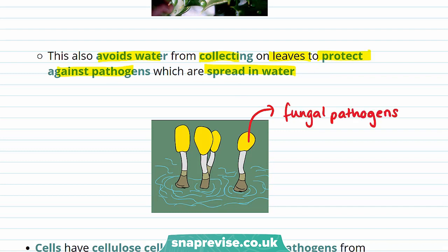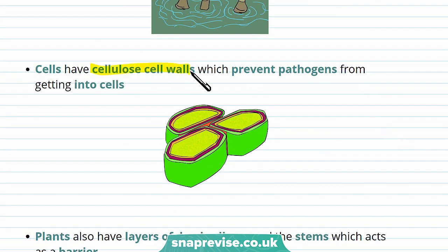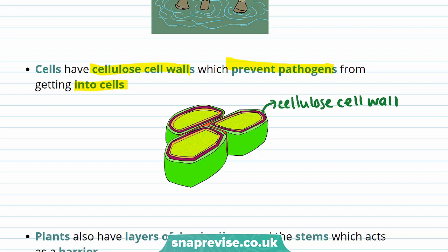Most fungal pathogens require standing water for spore germination. Cells also have a cellulose cell wall, which prevents pathogens from getting into the cells. Cellulose cell walls are excellent barriers. Plants can have primary and secondary cell walls. The primary cell wall is made up mostly of cellulose, giving the cell strength and flexibility because the cellulose fibres are cross-linked with other substances such as pectin. Many cells also have a secondary cell wall that develops inside the primary cell wall, forming another barrier.